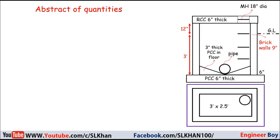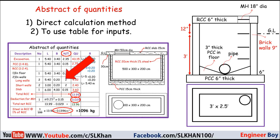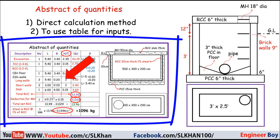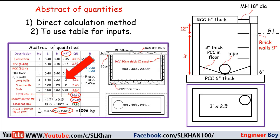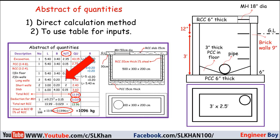We have two methods: the first is direct calculation, and the second is to use a table. This table method was used in the previous lecture on the abstract of quantities for an underground water tank — the link is in the video description. This time, let's use the direct calculation method for the manhole.